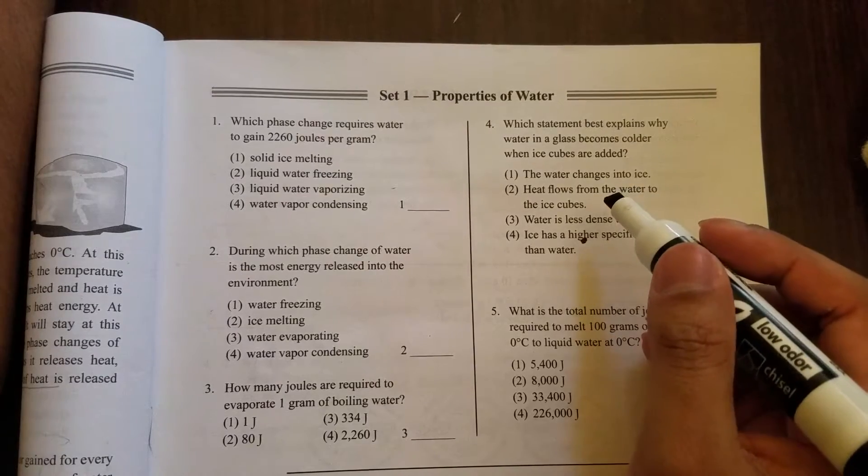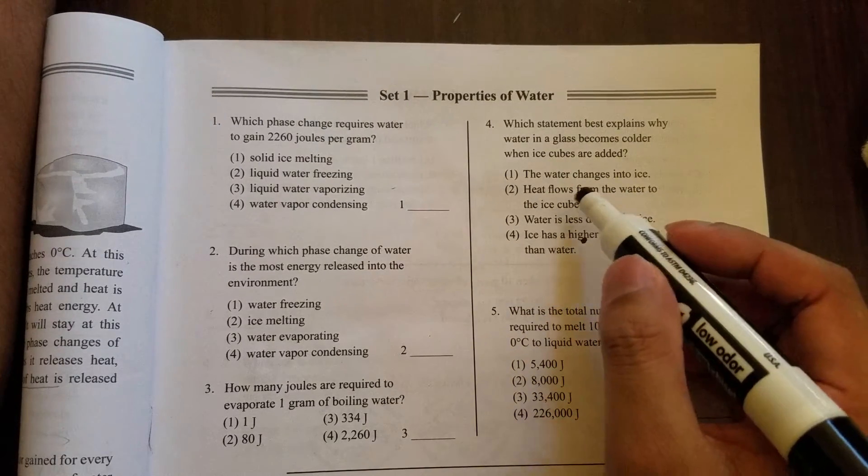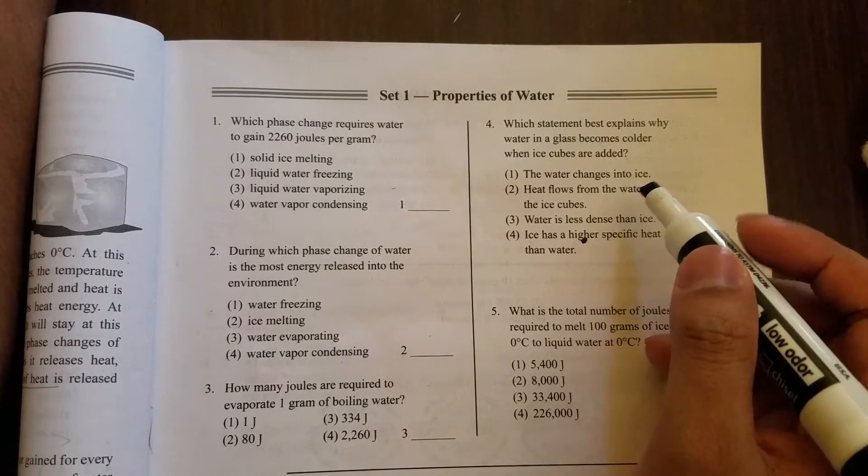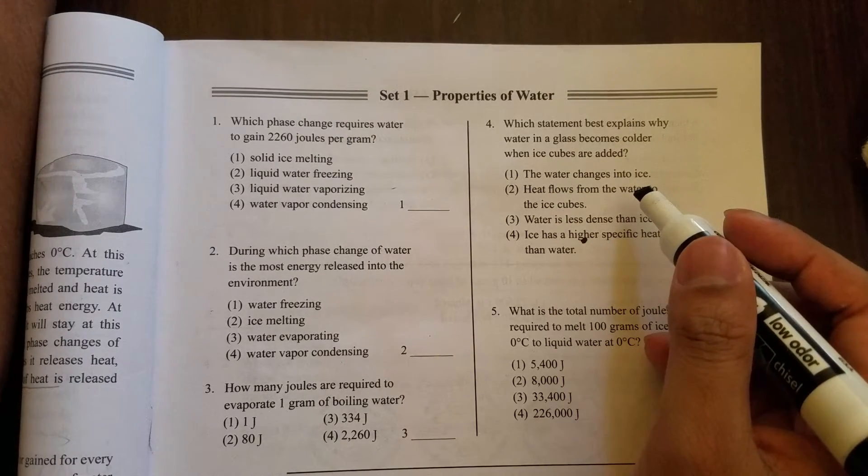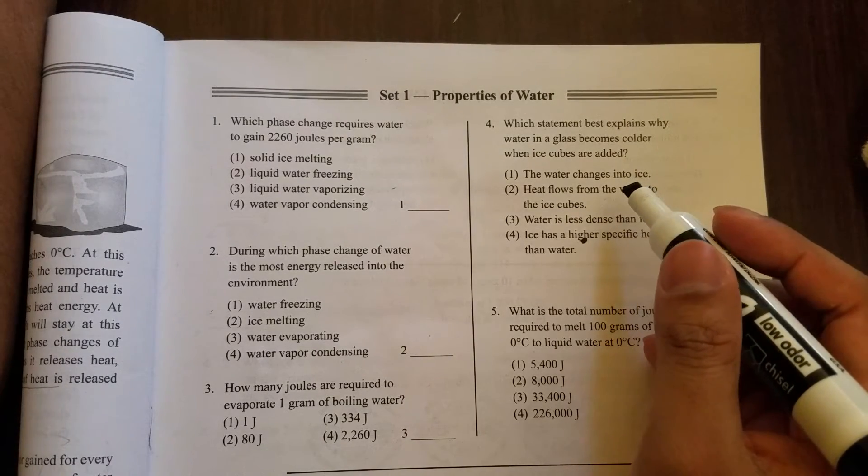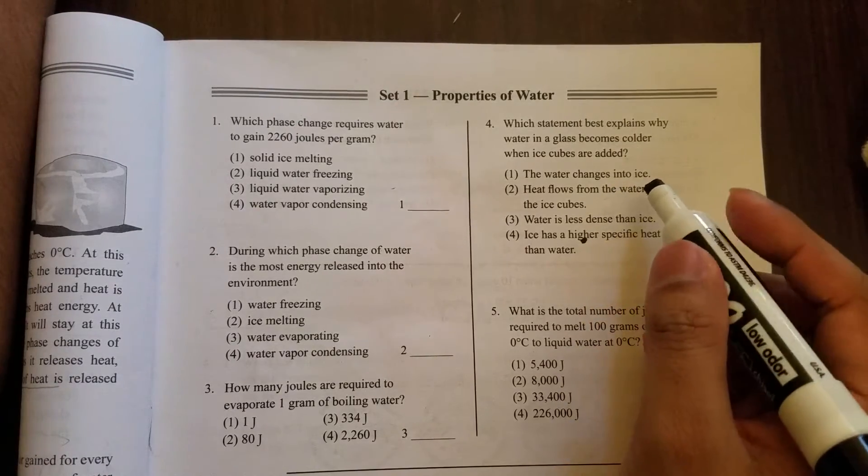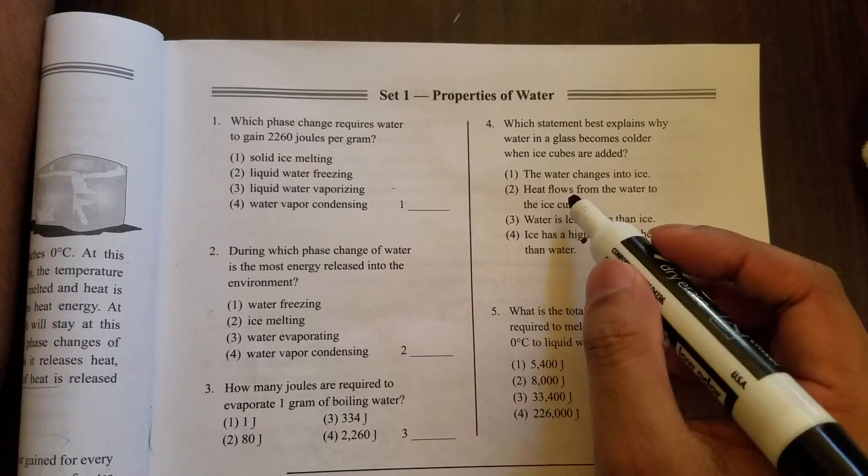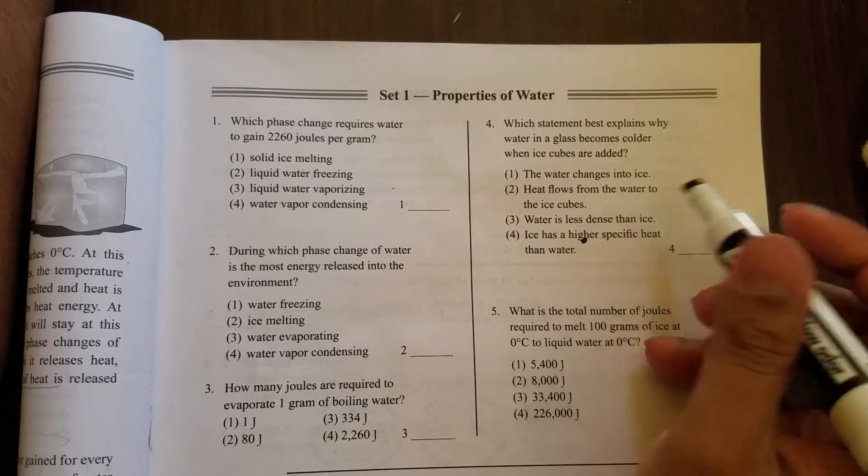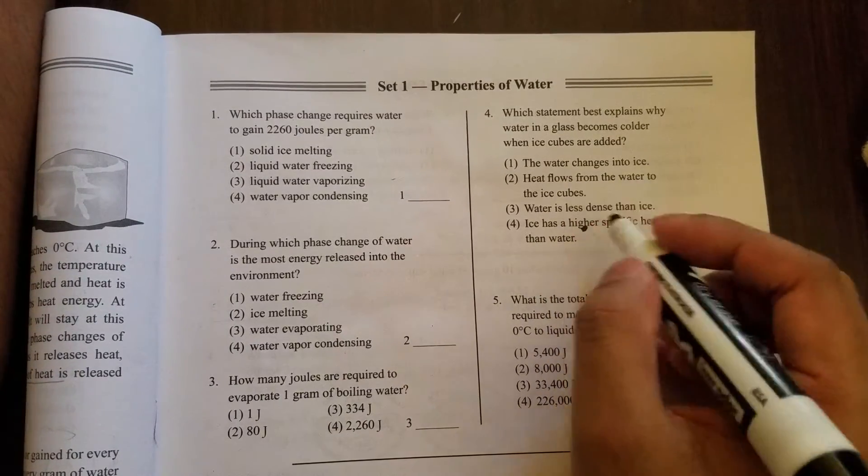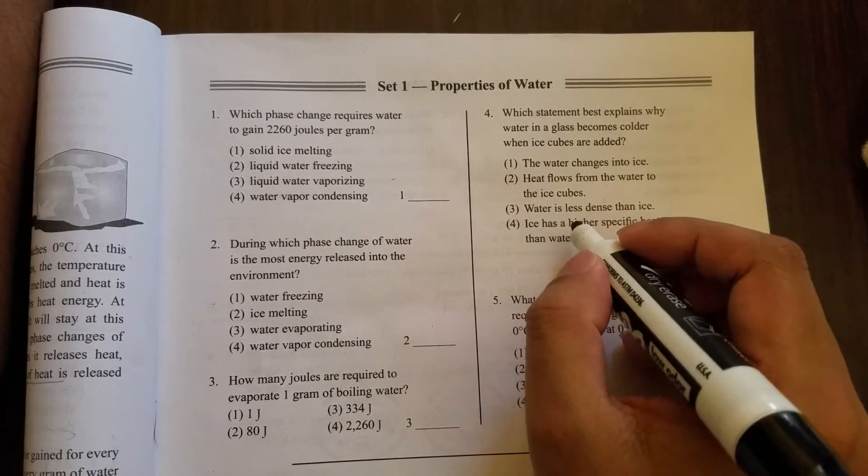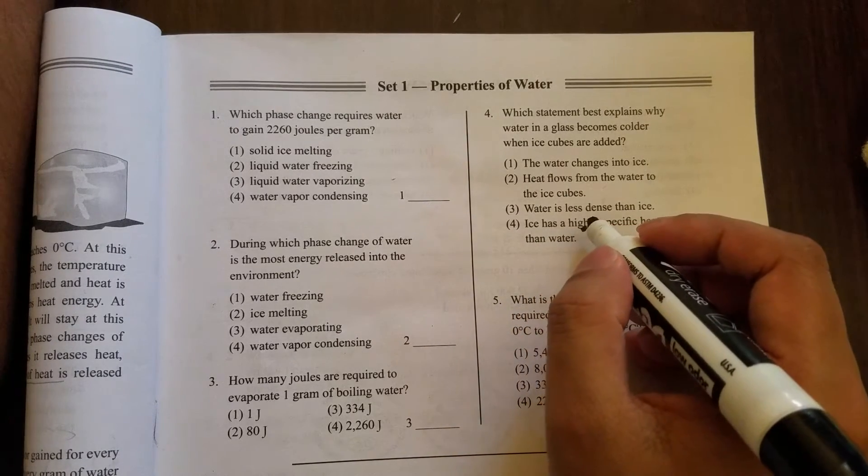The first option says the water changes into ice. If you add ice cubes in a glass of water, that doesn't happen, right? The water doesn't change into ice. Option two: heat flows from the water to the ice cubes. This choice may be a little confusing, so let's look at the other options.